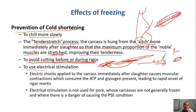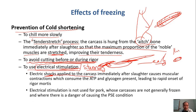Another approach is to use electrical stimulation. This is different from electrical stunning — stunning is applied to a live animal to render it unconscious before slaughter. Electrical stimulation means we apply electricity to the carcass, the dead animal. Applying electric shocks to the carcass immediately after slaughter causes muscular contraction, which consumes the ATP and glycogen present, leading to rapid onset of rigor mortis.